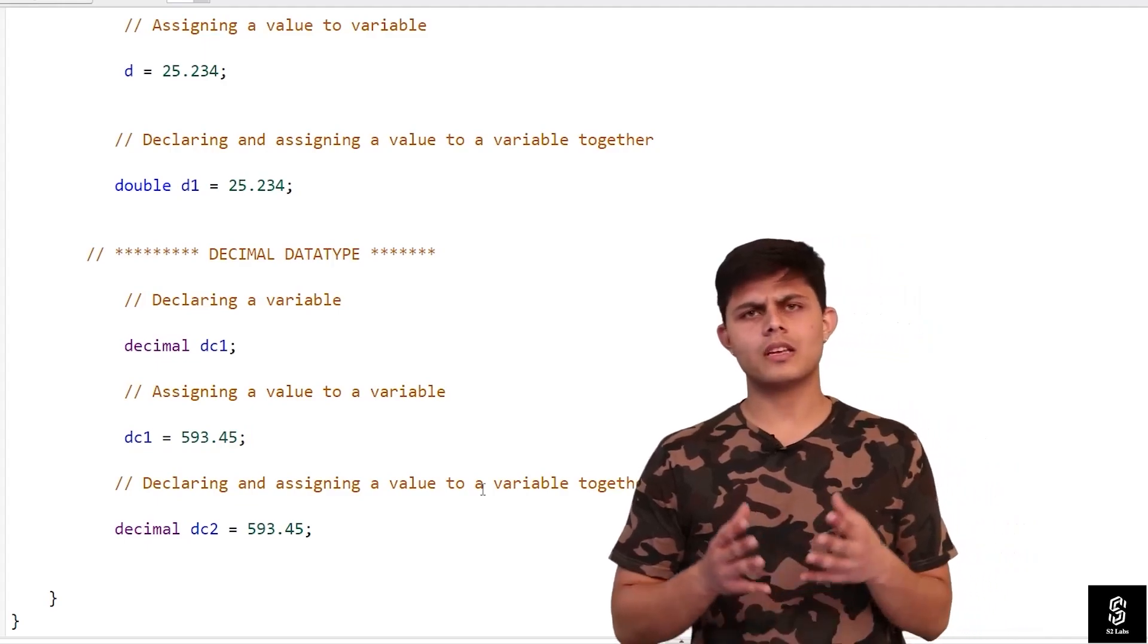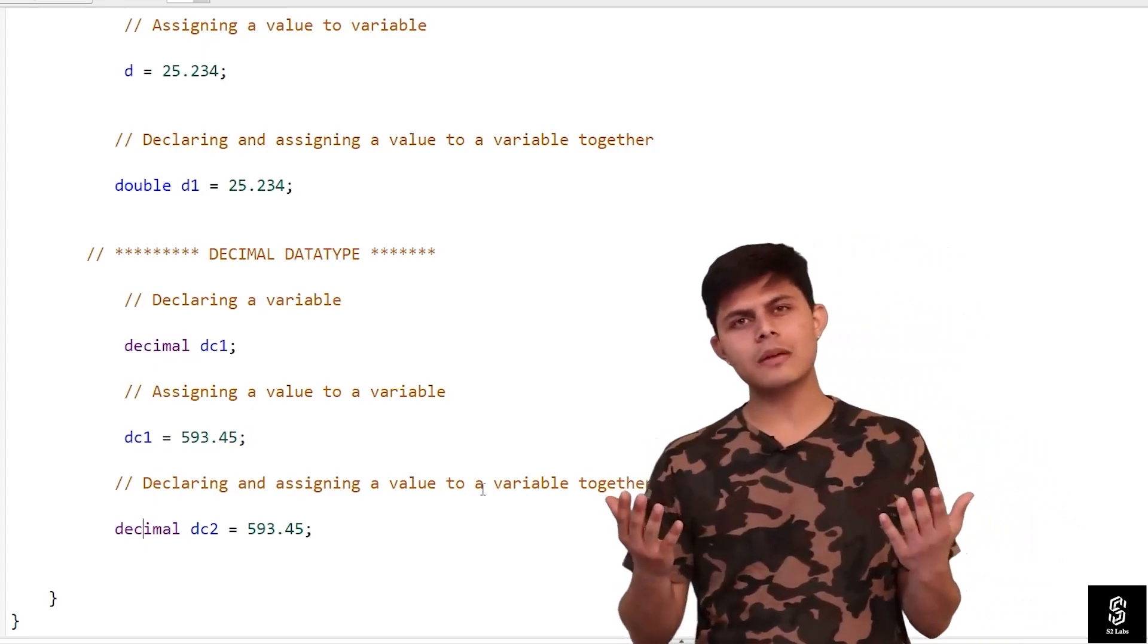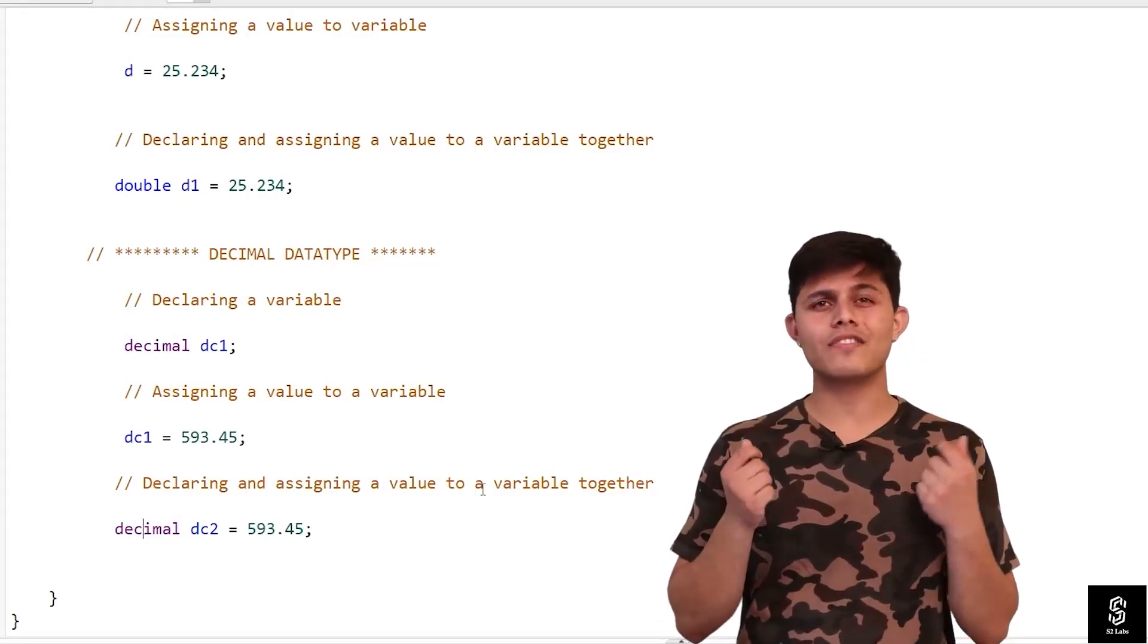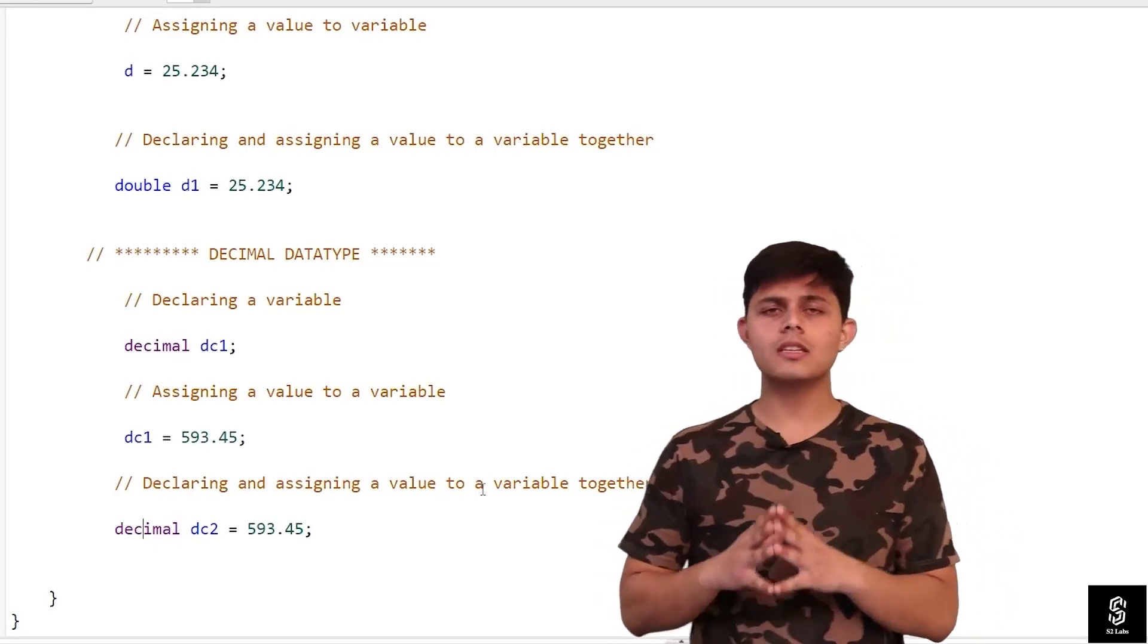Both of these data types can be used as a floating point data type in Apex, but you must be wondering what is the basic difference between both of them. Honestly speaking, there is no such difference, but there is a minute difference between both of them.